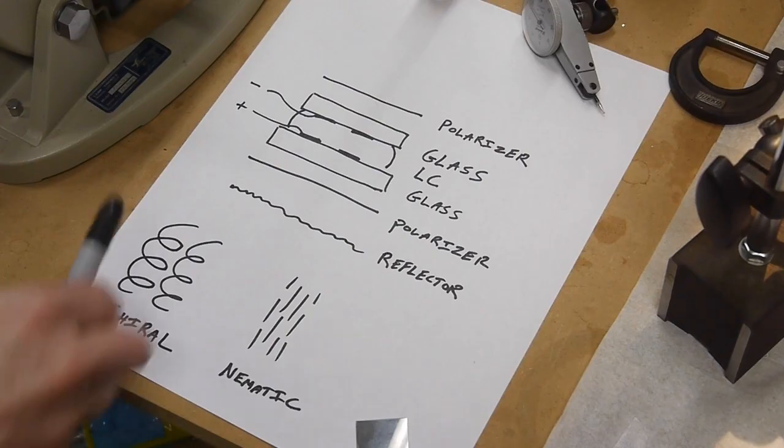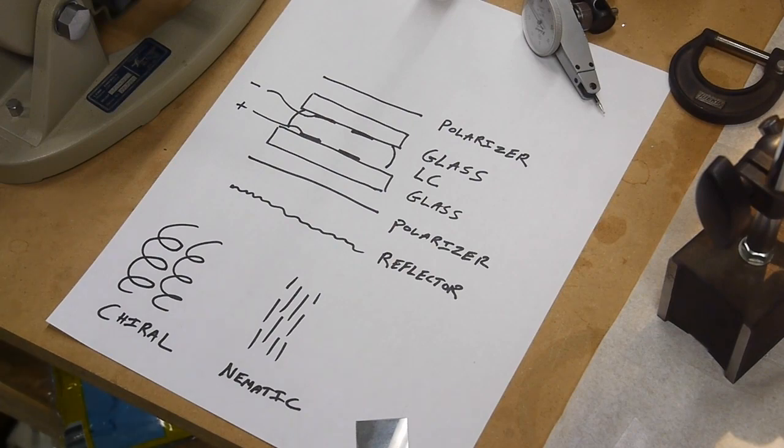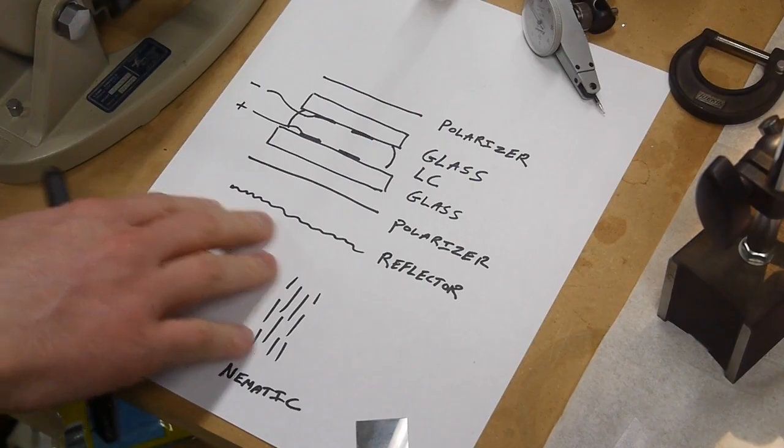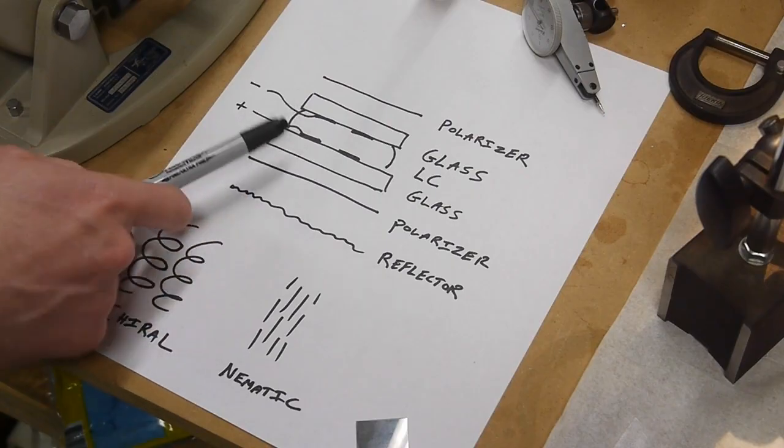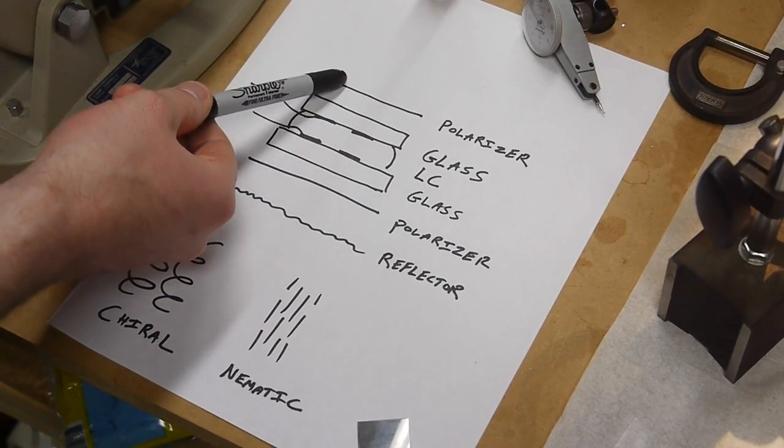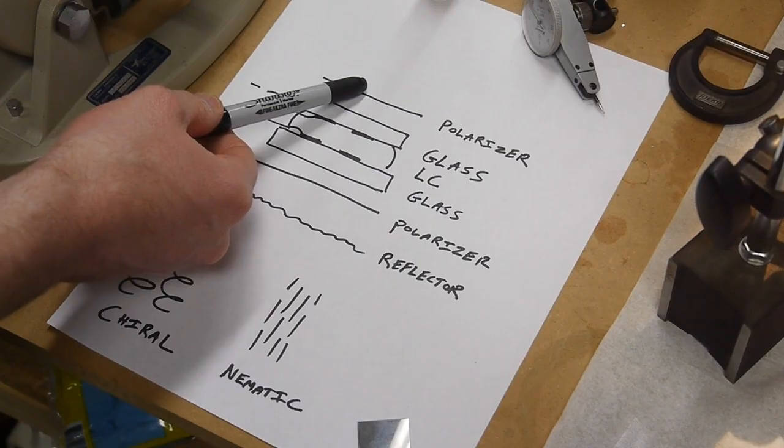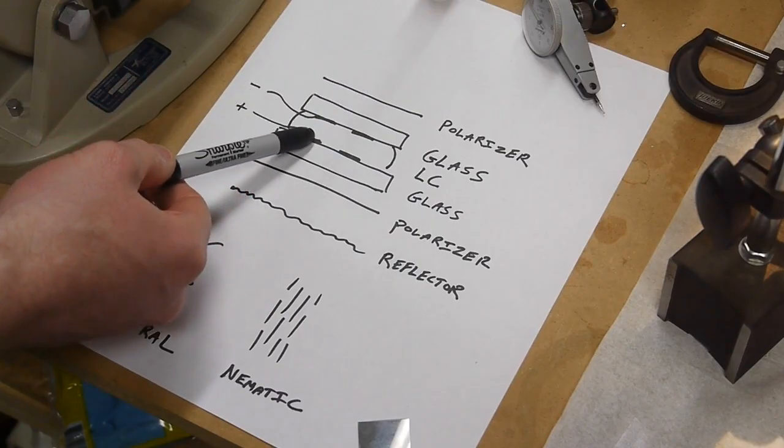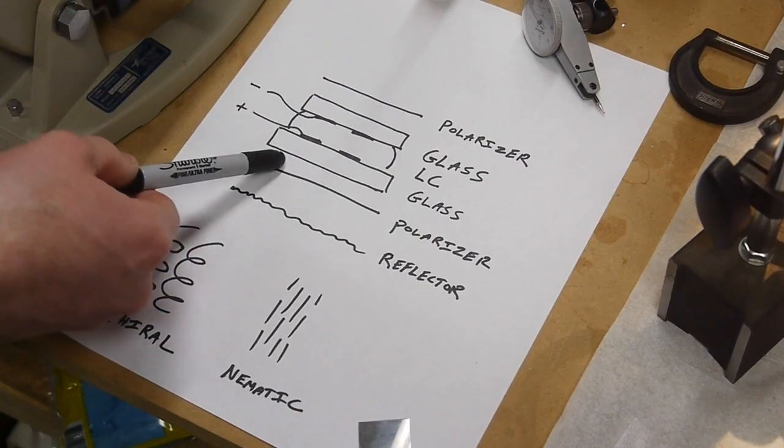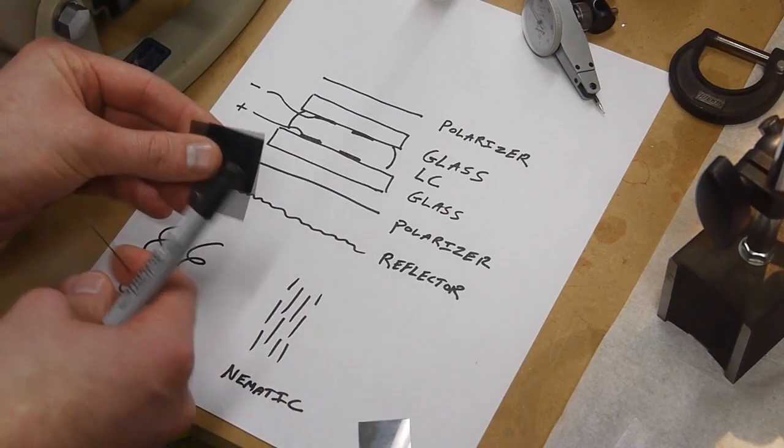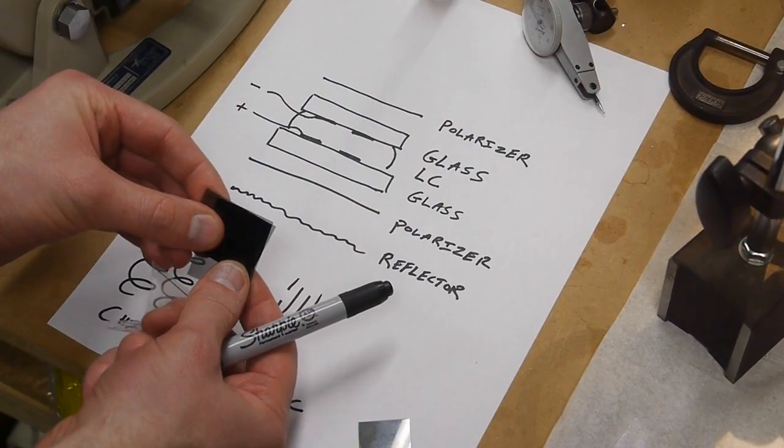Let's say we had some liquid crystal that we could turn on and off with electricity. When it was on it would scramble light polarization, and when it was off it wouldn't do anything to it. We could build a display with a stack-up like this. If we didn't have any power applied, the incoming light would be polarized by the top polarizer, pass through the glass, and then get stopped at the second polarizer because our polarizers would be crossed.